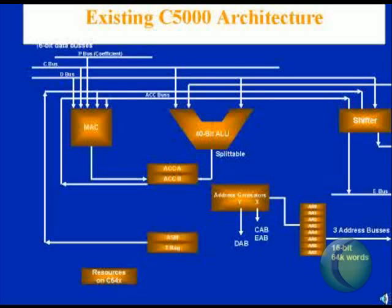To provide addresses for the C and D bus, we have two address generators, X and Y, which are supported by eight auxiliary registers which contain the addresses or pointers to data. There's a barrel shifter on the 5-4X, which has any number of inputs — C and D bus, accumulator buses, etc. The 5-4X also has a single 16-bit output bus, known as the E bus.